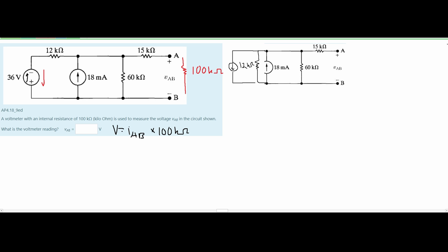To find our current we're just going to use Ohm's law where we have current is equal to voltage over resistance. We know the voltage to be 36 volts and we know the resistance to be 12 kilo ohms. This is going to give us a current of 3 milliamps.